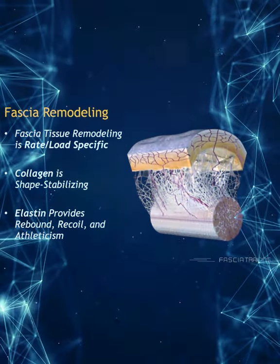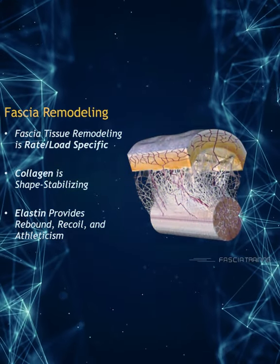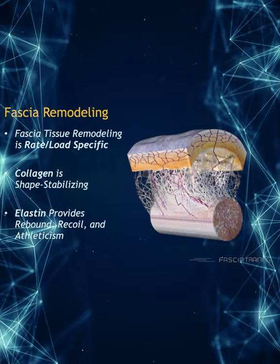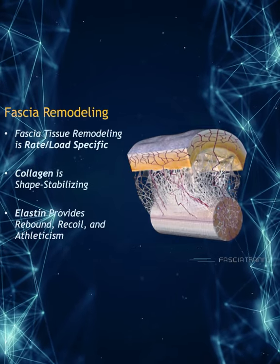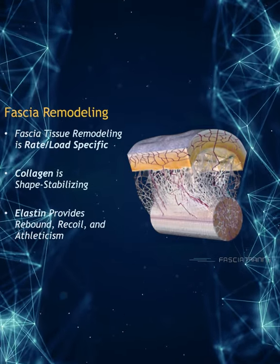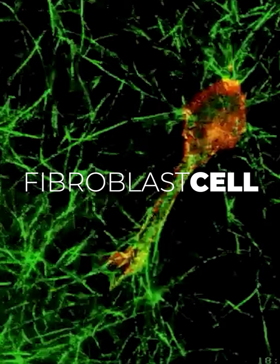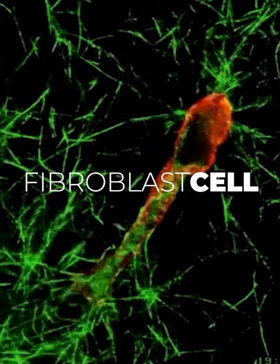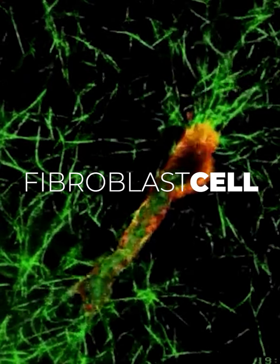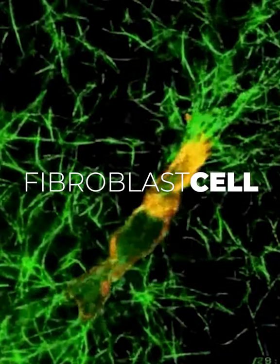As we dive in here, we want to understand how the fascia is remodeled. When you think about fascia — collagen, elastin, and reticulin — it's important that the fibers of the fascia, the myofibroblasts that are laying down this fiber, are doing so in a way that is rate-load specific.